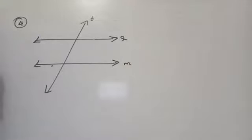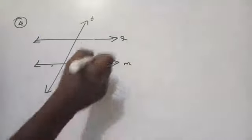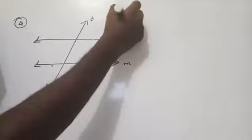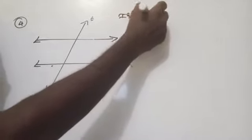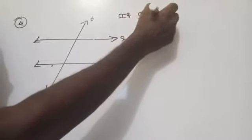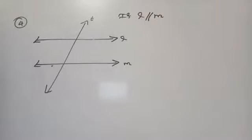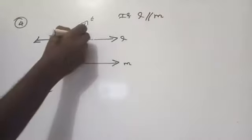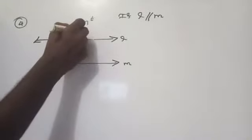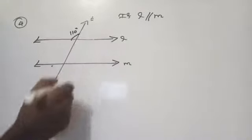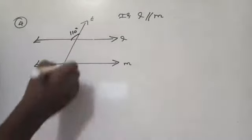It is given that L is parallel to M. If L is parallel to M, find the values of x in each of the following figures. It is given that 110 degrees — find the value of x.